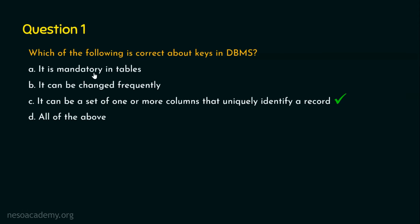Why is Option A incorrect? Because a table or relation may or may not contain a key attribute, so we can't say it is always mandatory. At the same time, the column or attribute chosen as a key will not be changed frequently — only in very rare situations can it be changed. That is why Option C is the right answer for question number one.